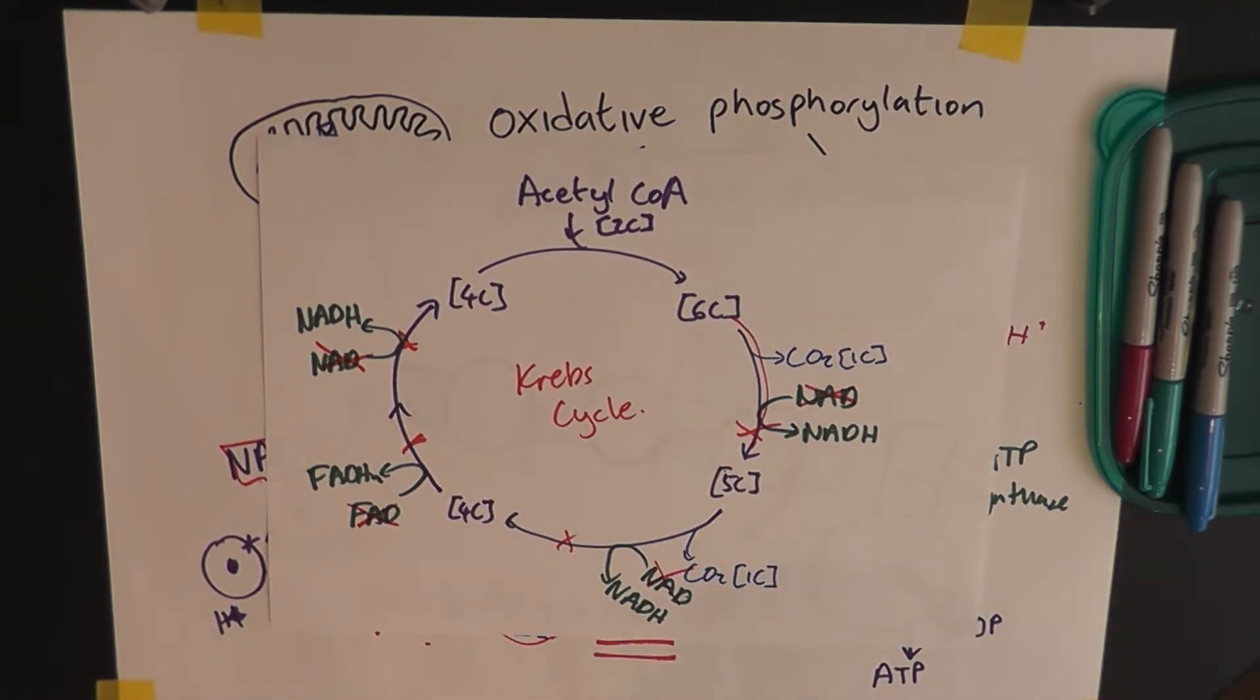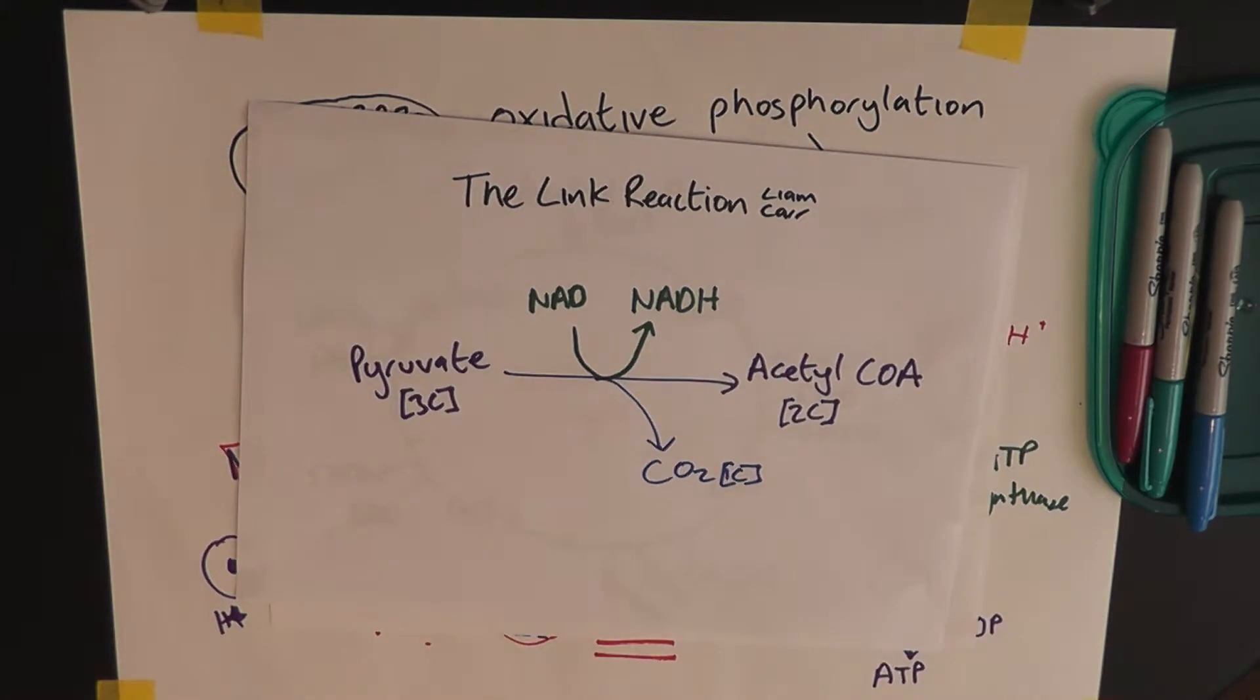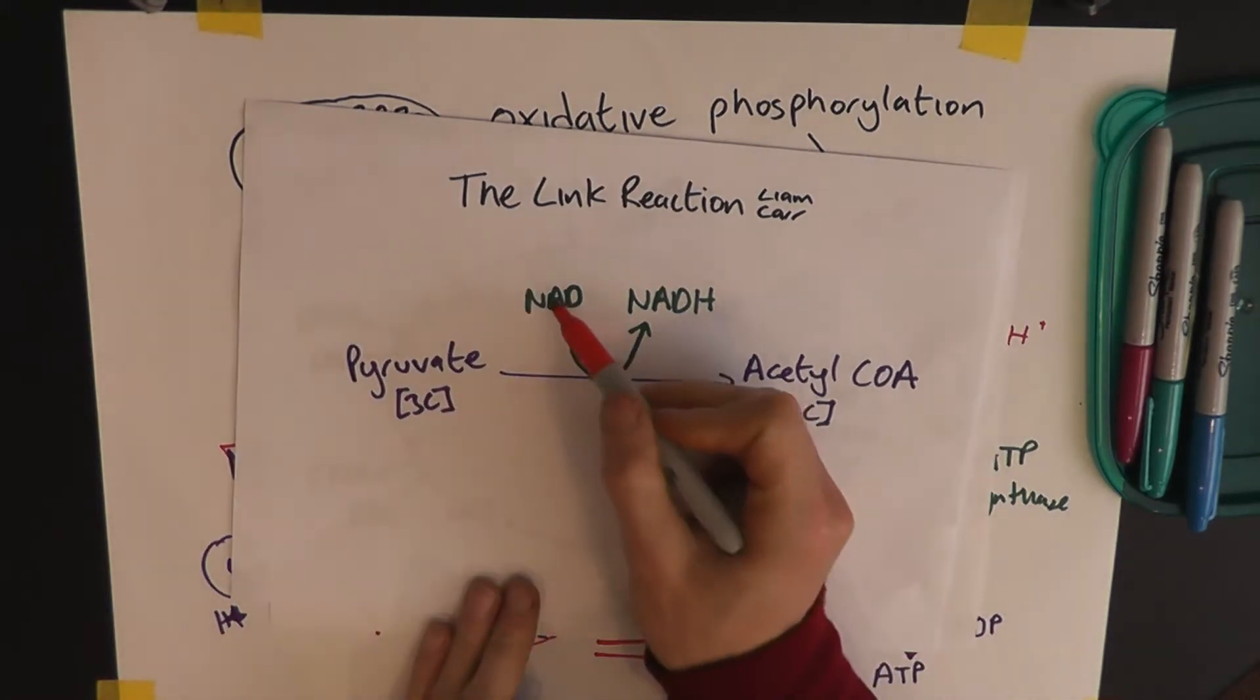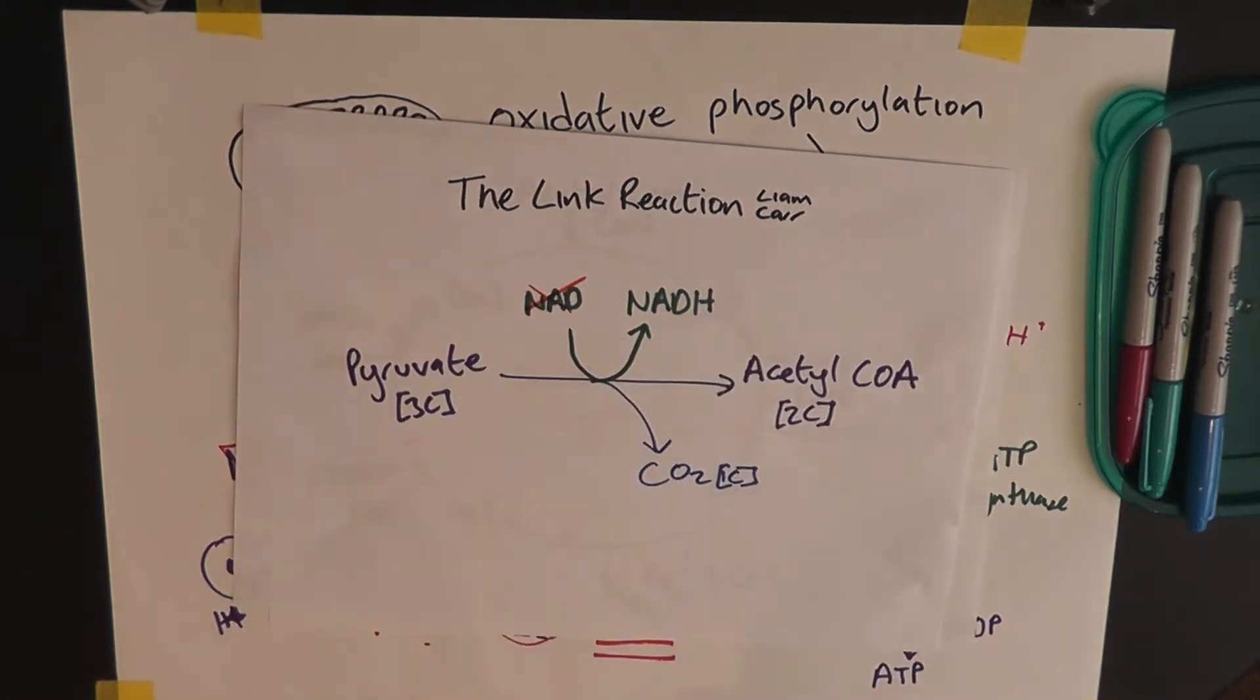Equally, if the Krebs cycle stops, that means that you can't do the link reaction either. Because, as you can see with the link reaction, that requires NADH. So, what on earth do we do?